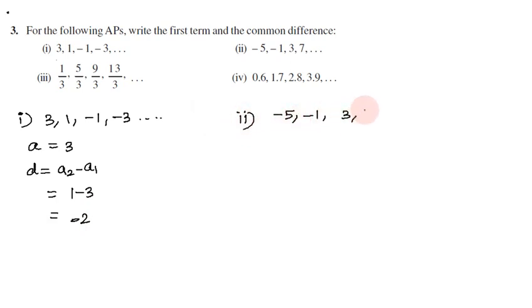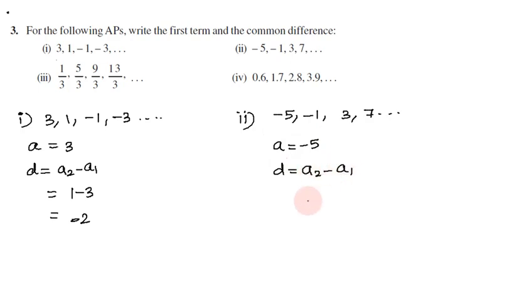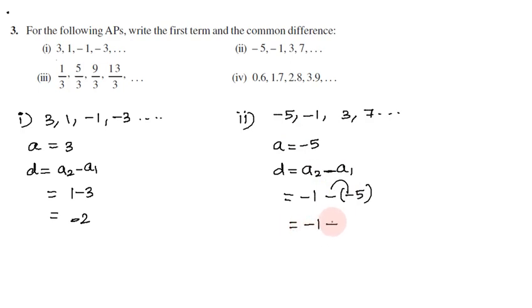Second subdivision: -5, -1, 3, 7. First term = -5. Common difference = second term minus first term = -1 minus (-5) = -1 + 5 = 4.